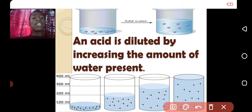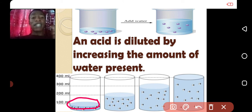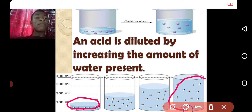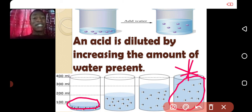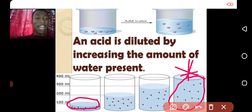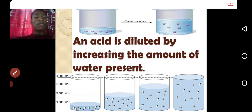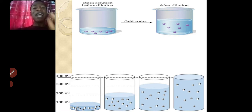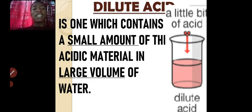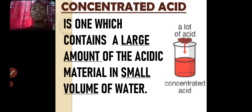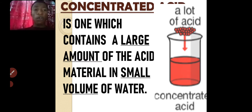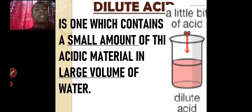The more water you are adding, the less concentrated the acid will be. Where you have 100 ml of water, the acid will be very concentrated compared to where you have 400 ml of water — that acid will be very dilute. A dilute acid contains small amount of acidic material in large volume of water, while a concentrated acid contains large amount of acidic material in small volume of water.